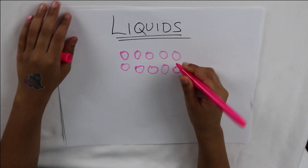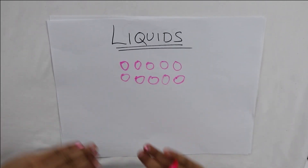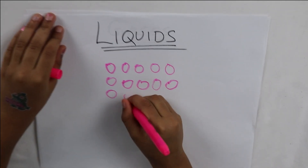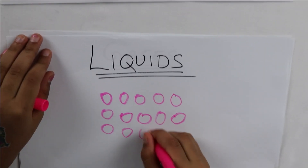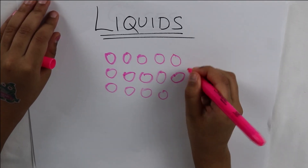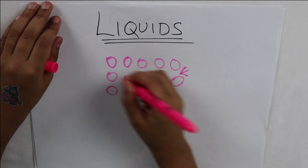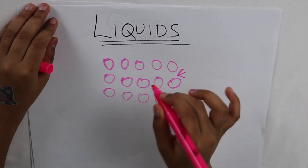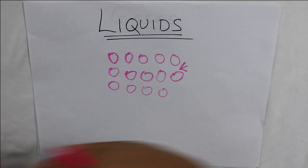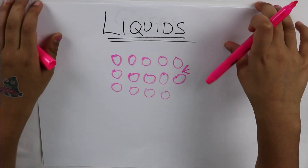Liquids just take the shape of the container they're in. You see these molecules I'm drawing now — they have some space in them. That space is what allows the water to move around, because the molecules move around.